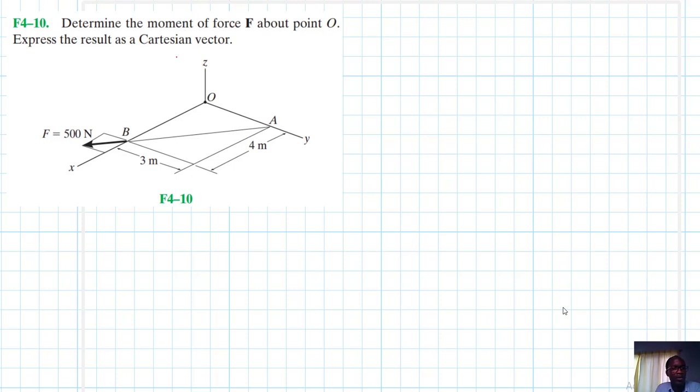Hello, I welcome you all. The problem reads: determine the moment of force F about point O, express the result as a Cartesian vector. So what do we do? First things first, we'll have components of this force.